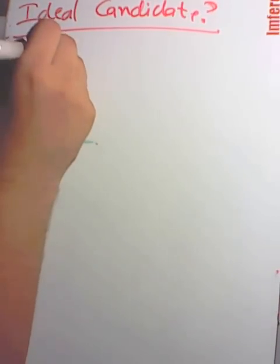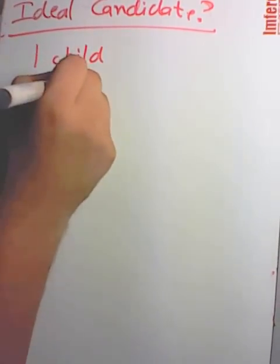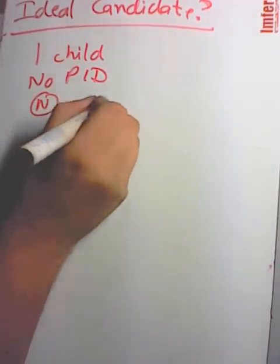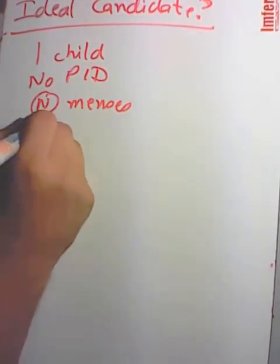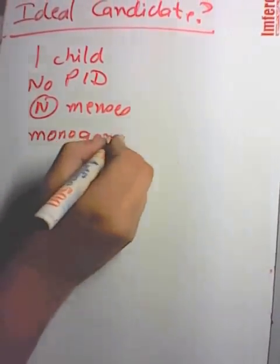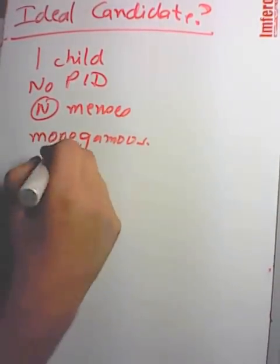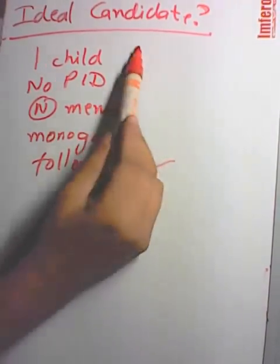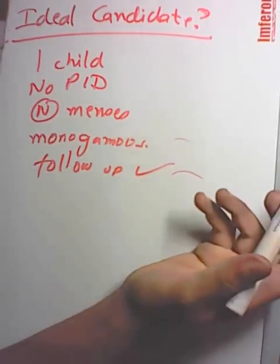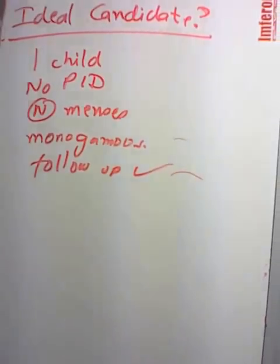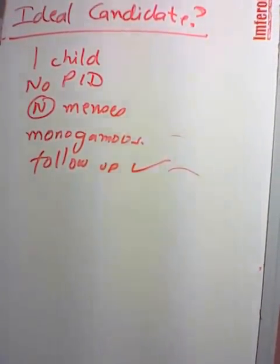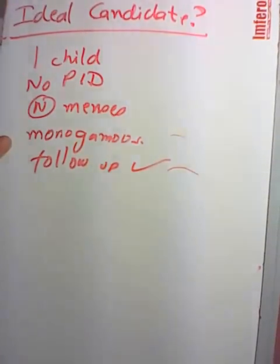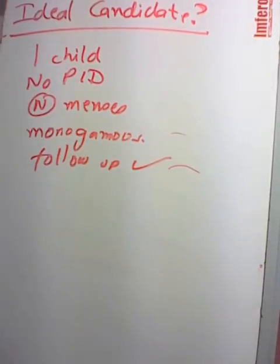The ideal candidate for IUD insertion: has one child, no history of PID, normal menses, monogamous relationship, and can follow up. IUDs are not recommended for women with multiple sex partners due to the risk of PID, or for women who have not had children.